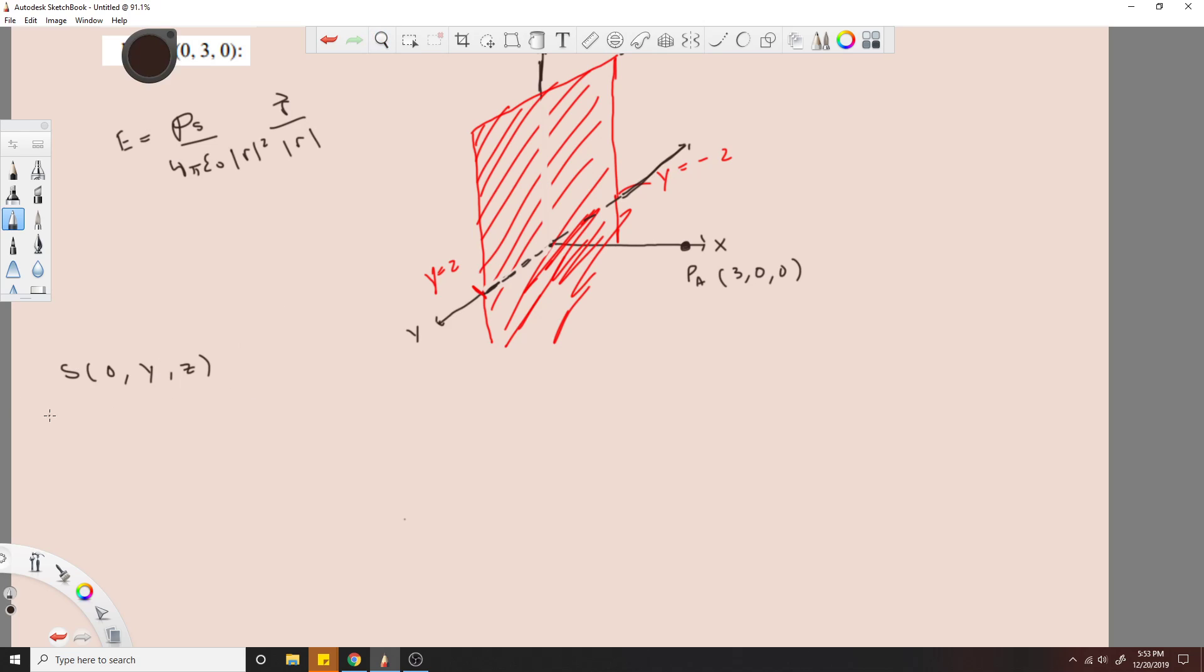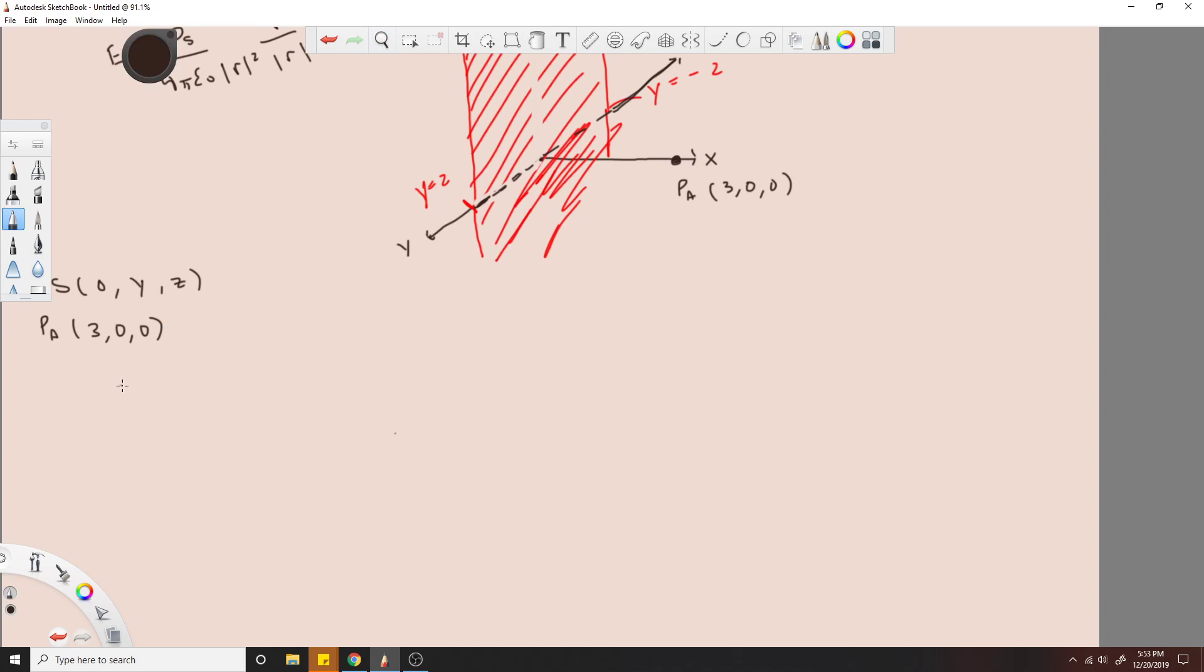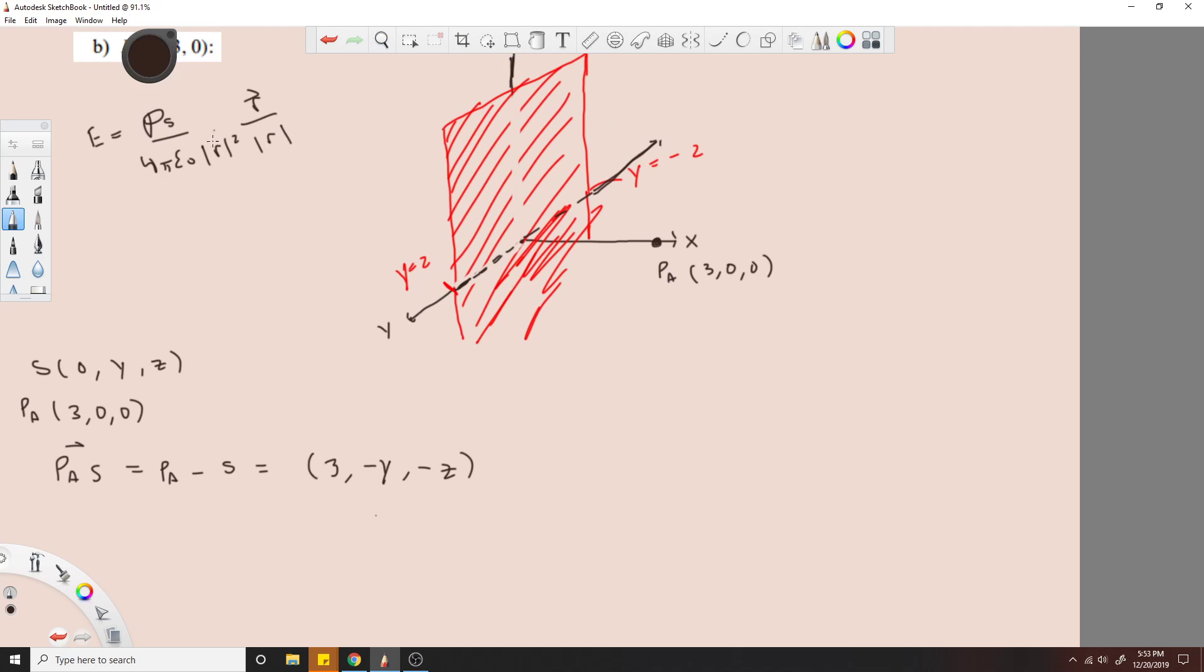Then the vector is equal to the difference of these two, so I'll take PA minus S is equal to 3 minus 0 is 3, 0 minus y is negative y, 0 minus z is negative z. So now we just plug in these vectors to this equation here.